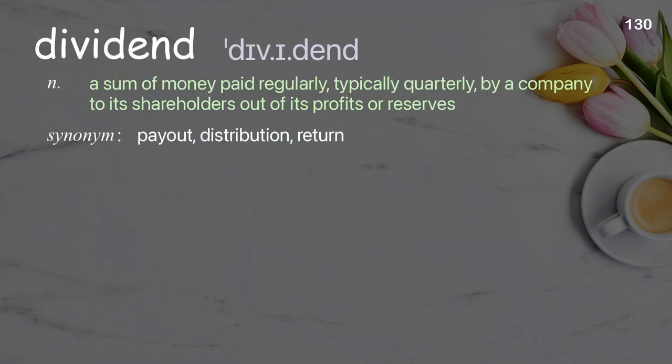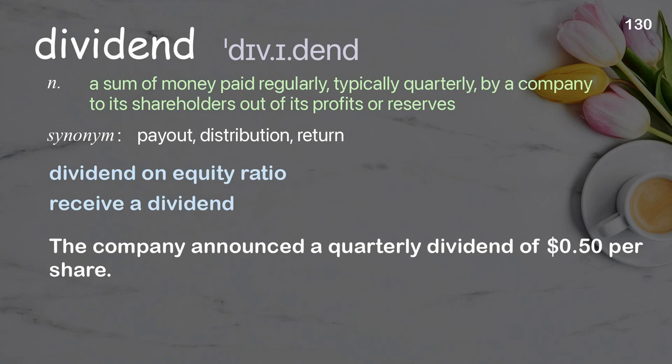Dividend. A sum of money paid regularly, typically quarterly, by a company to its shareholders out of its profits or reserves. Examples: dividend on equity ratio, receive a dividend. The company announced a quarterly dividend of $0.50 per share.